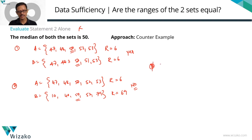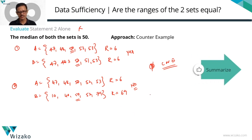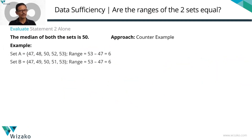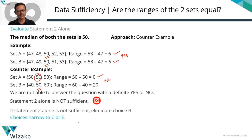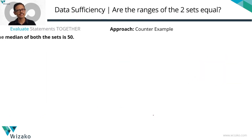We're down to B, C, or E — eliminate B. A clean counterexample from the summary: set with 50, 50, 50 has median 50, range = 0; set 40, 50, 60 has median 50, range = 20. The ranges differ, so Statement 2 alone is not sufficient. Eliminate B. We're down to C or E. Now combine the two statements.